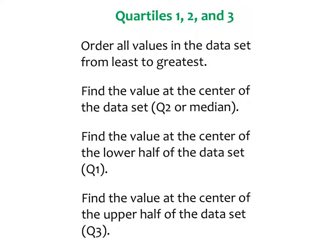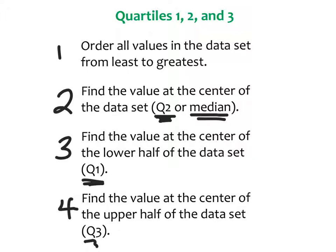To find quartiles 1, 2, and 3, I first must order all of my values from least to greatest. That's step 1. Then find the value at the center of the data set — that becomes quartile 2, or what we already know as the median, the middle. Then find the value at the center of the lower half — that's quartile 1. And then find the value at the center of the upper half — that's quartile 3.